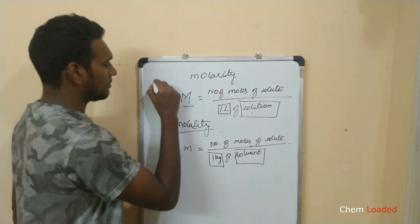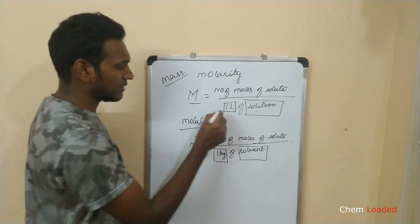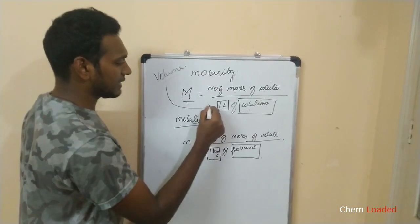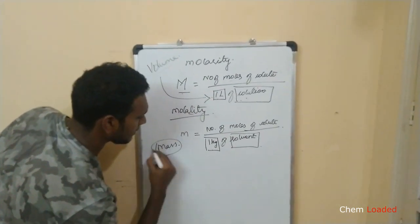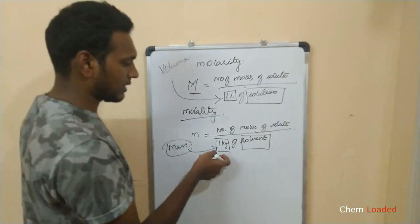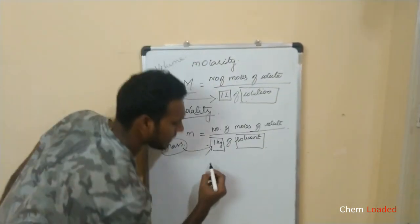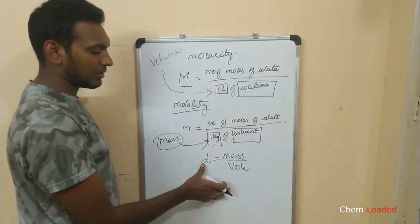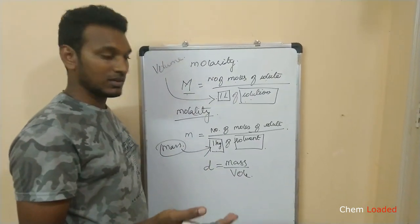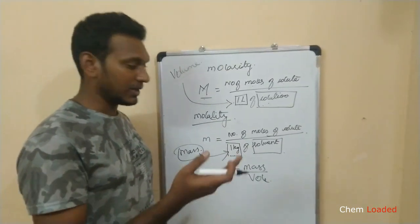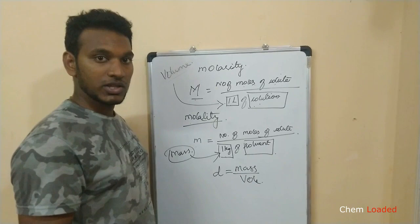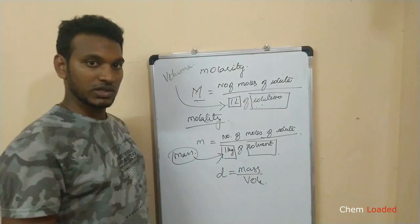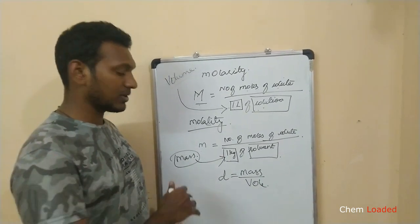Molality is a mass-based concentration, while molarity is a volume-based concentration. This matters because it depends on the density of the solvent. For example, water has a density of 1 kg per liter, but DCM has a density of 1.4, so there is a variation between the two.